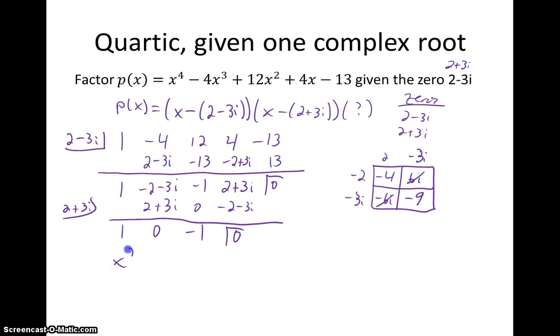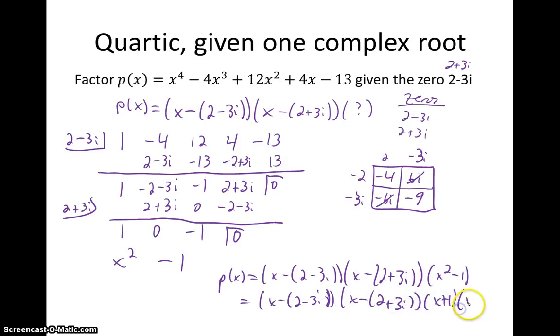So that gives us x squared minus 1, which is exactly what we got in the last video. So again, to wrap this up, we know that p of x is equal to our two factors up here, x minus 2 minus 3i, times x minus 2 plus 3i, multiplied by our new factor here, x squared minus 1, which is actually factorable. It's a difference of squares. So we can write it out even a little bit better. x minus 2 minus 3i times x minus 2 plus 3i, and then multiplied by x plus 1 and x minus 1. And we have our complete factorization.